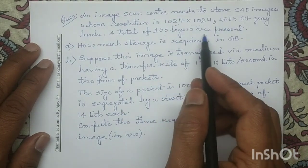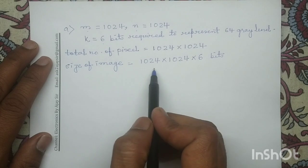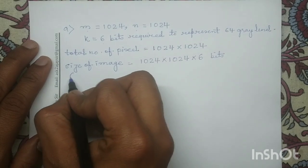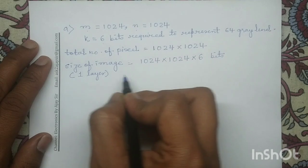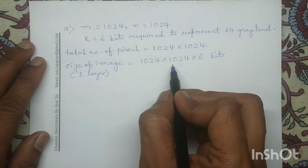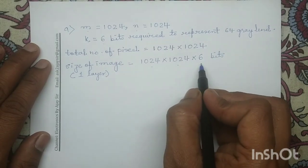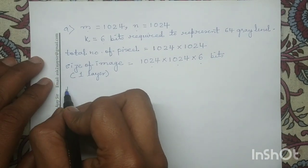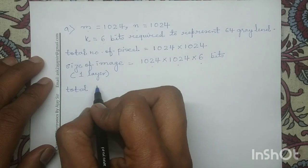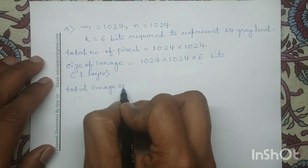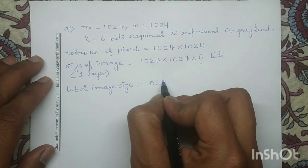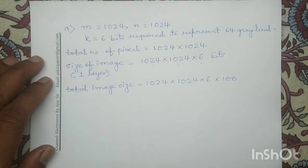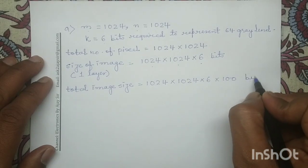There are 100 layers present in total. This expression — 1024 × 1024 × 6 — gives the size of a single layer, where the number of rows is 1024, the number of columns is 1024, and each pixel requires 6 bits. If 100 layers are present, the total image size is 1024 × 1024 × 6 × 100. This is the total size of this image in terms of bits.